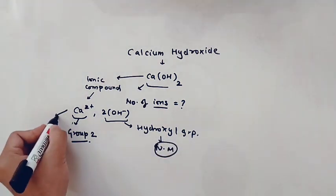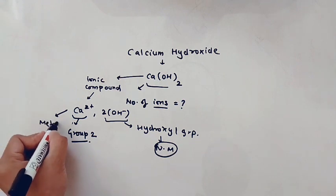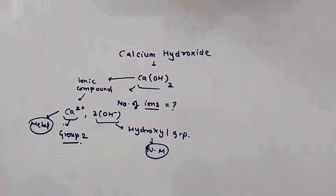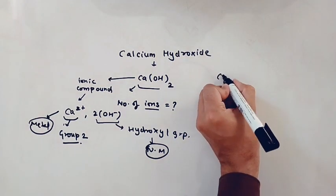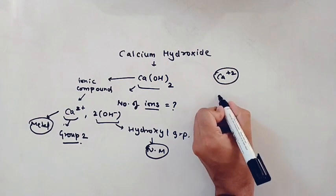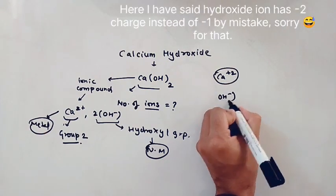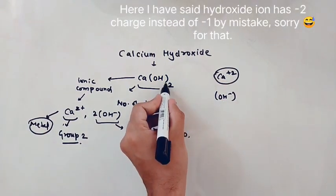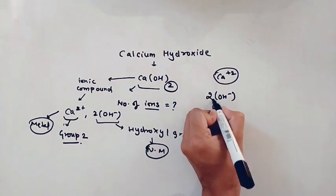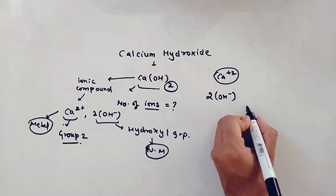This is our metal part. So calcium has +2 charge, and OH⁻ has -1 charge. But see, here we are having 2 OH, so we will be writing 2 before OH⁻.